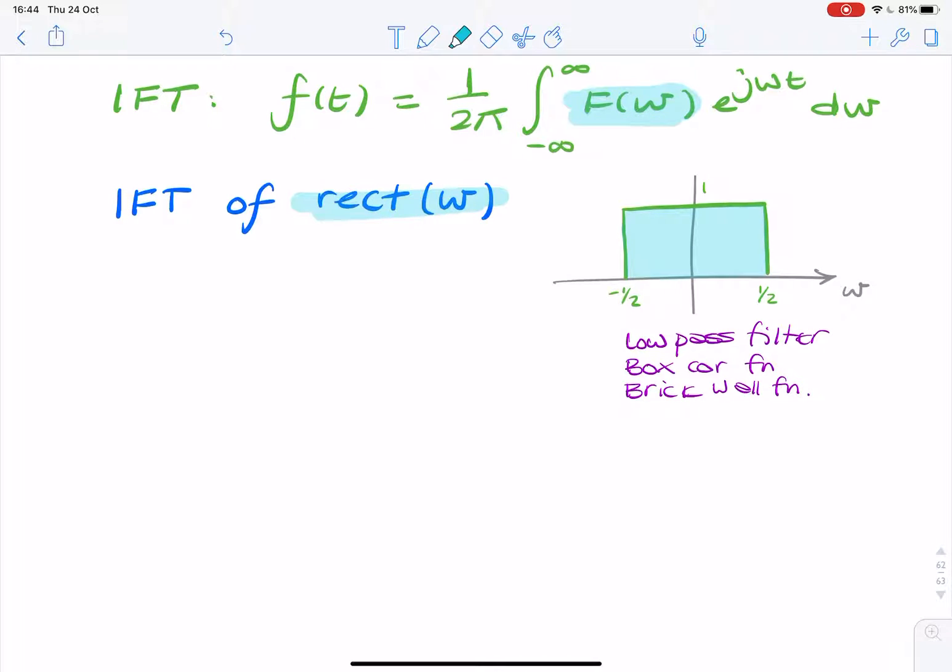We can simply replace f of omega with the value from here, which is either 1 or 0. So if we're integrating from minus infinity to infinity, we might as well integrate from minus half to half, and the value of f of omega would simply be 1. So we can write f(t) equals 1 over 2π, integral from minus 1/2 to 1/2, of 1 times e to the jωt dω.